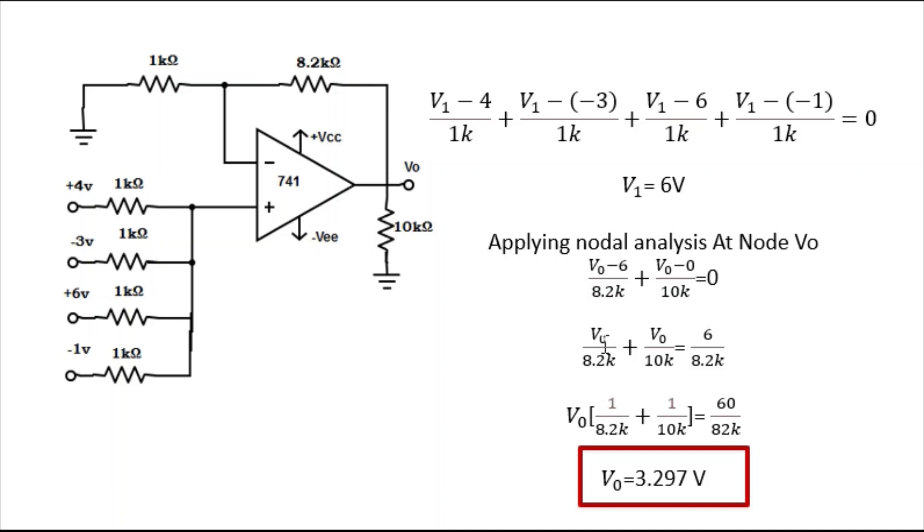When you solve this equation: V0 divided by 8.2k plus V0 divided by 10k. We have taken to the other side 6 by 8.2k. When you solve it, you will get V0 equals 3.297 volt. So this will be your final answer.